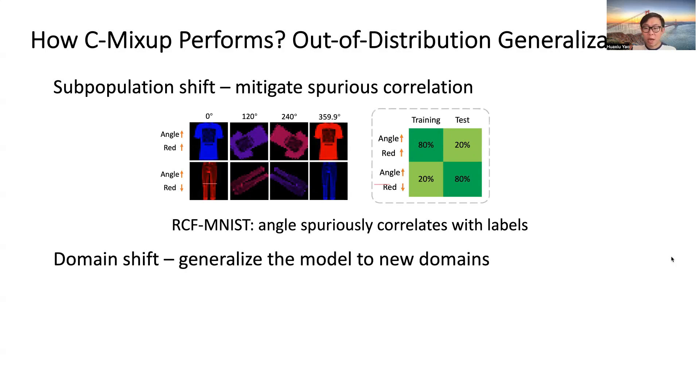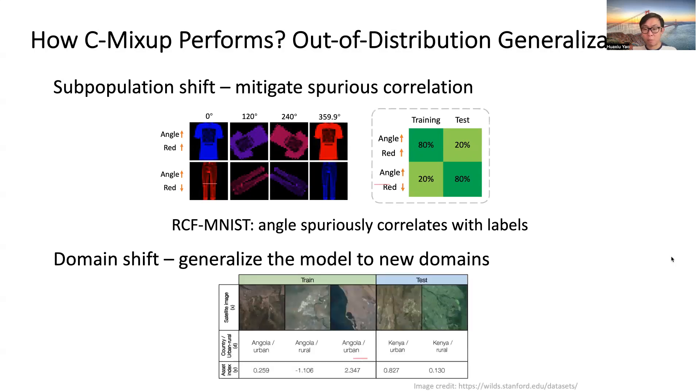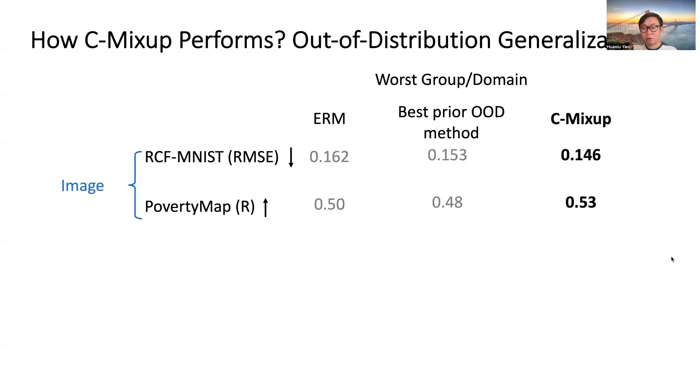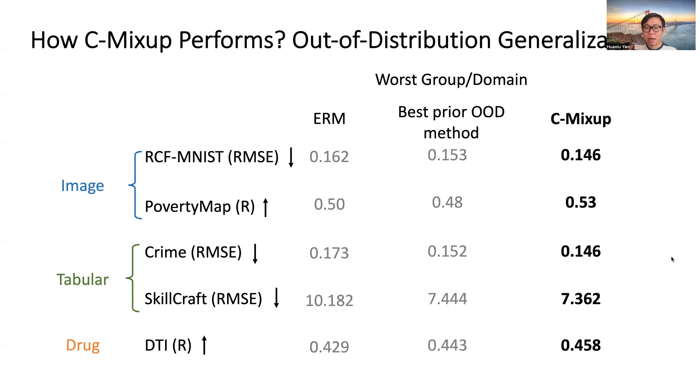In domain shift, we aim to generalize the model to new domains. For example, in the PartyMap dataset, we aim to generalize the model to new countries. Similarly, C-Mixup improves the performance of out-of-distribution generalization on image data, tabular data, and drug data.